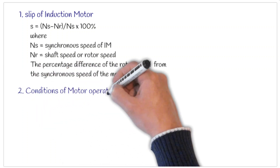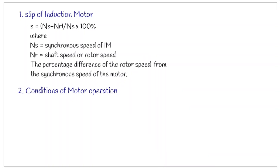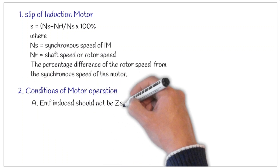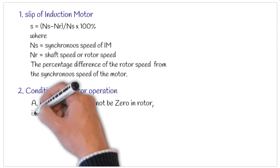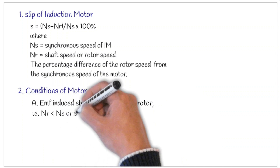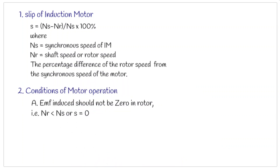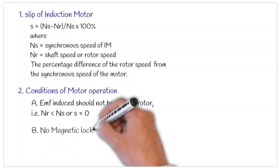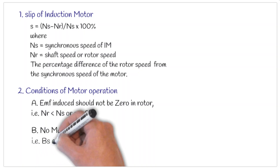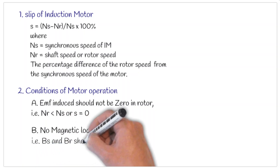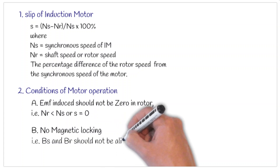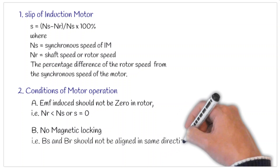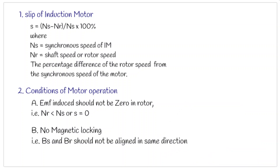Secondly, we need to understand the conditions under which the motor operates. Condition one: the EMF induced in the rotor circuit should not be zero, meaning Nr should not reach the synchronous speed — if this happens the EMF induced in the rotor will be zero. Condition two: magnetic locking should not take place between the stator magnetic field and the rotor magnetic field. Both these conditions describe what arrangements are made so that the induced EMF is not zero and magnetic locking does not take place.